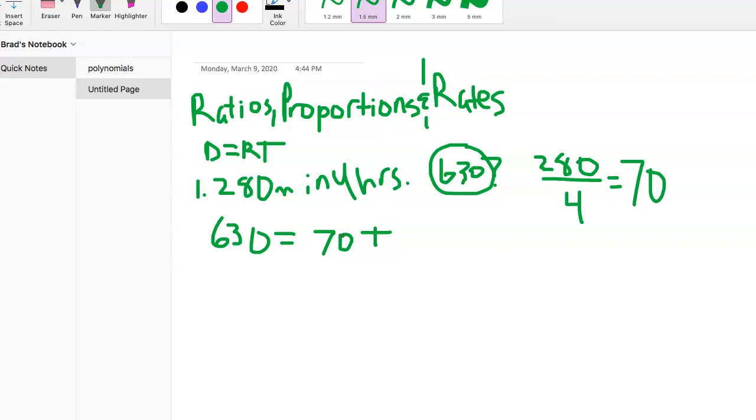Now our distance equals rate times time formula is set up. We have 630 equals 70T with T being hours. From here, divide each side by 70. Take a zero out of each of these. What's 63 divided by 7? Seven times nine is 63, so it took nine hours.